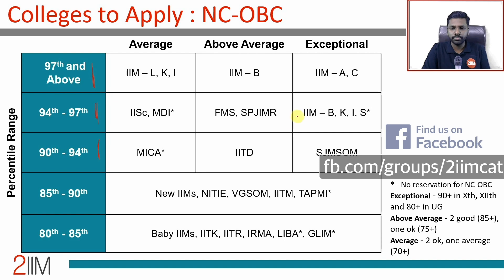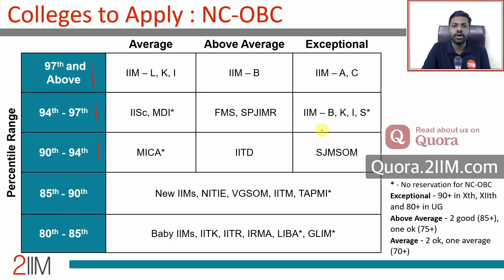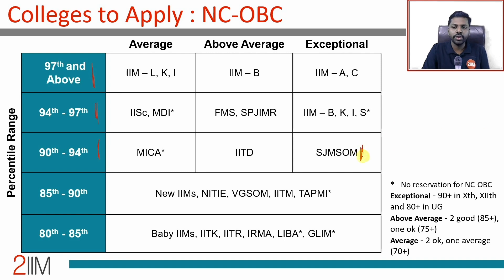For NC-OBC candidates: even with 95 to 97 percentile and a reasonably good profile, you are looking at FMS and SP Jain. With a great profile, IIM Bangalore, Kozhikode, Indore, and Shillong are options — you have a fighting chance, so go for it and convert your call. If you are in the 90 to 94 range, you are looking at MICA, IIT Delhi, and SJMSOM — IIT Bombay. SJMSOM pays exceptionally well and requires a brilliant profile; I've seen NC-OBC candidates convert SJMSOM with a 90 CAT score.